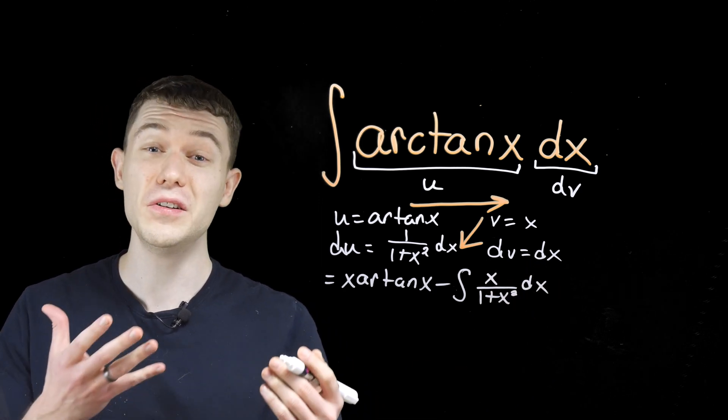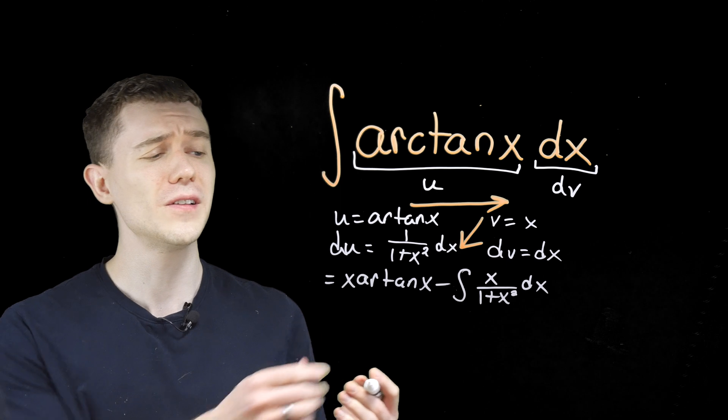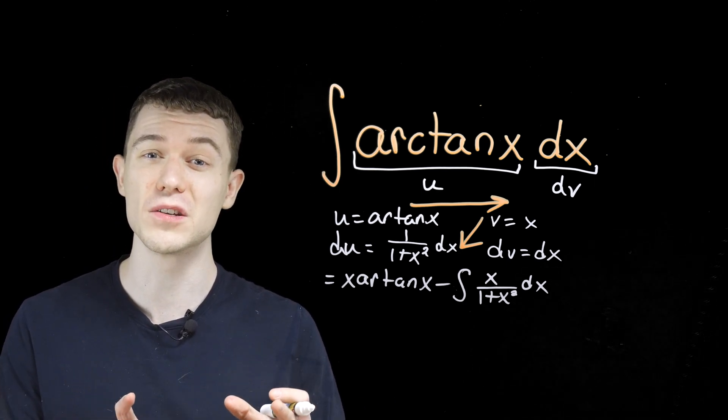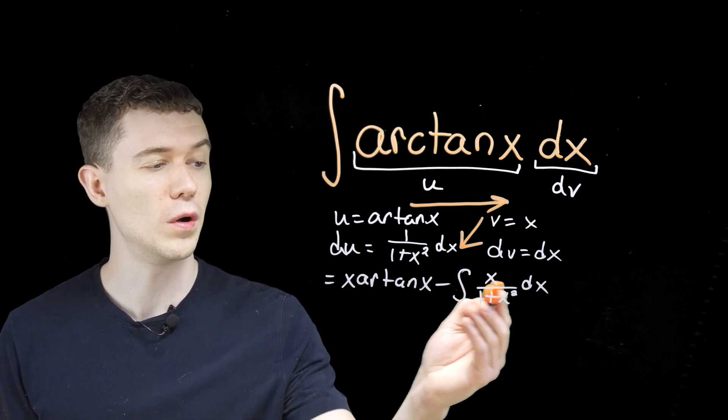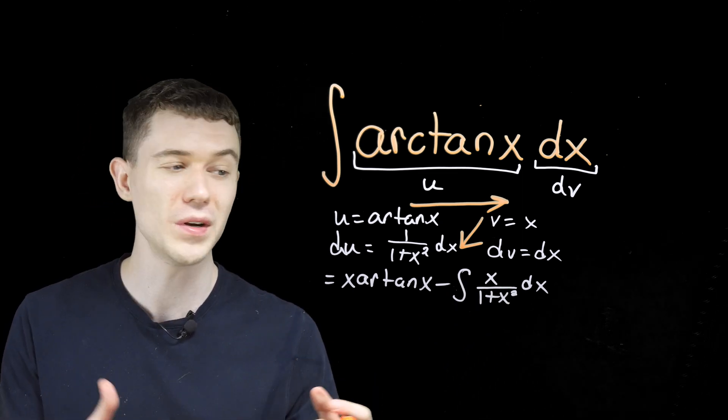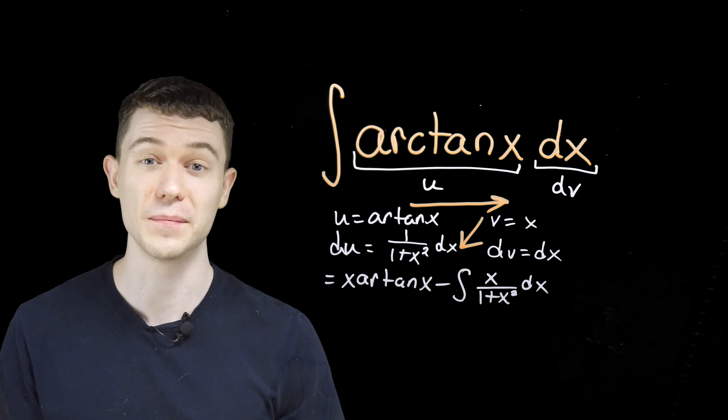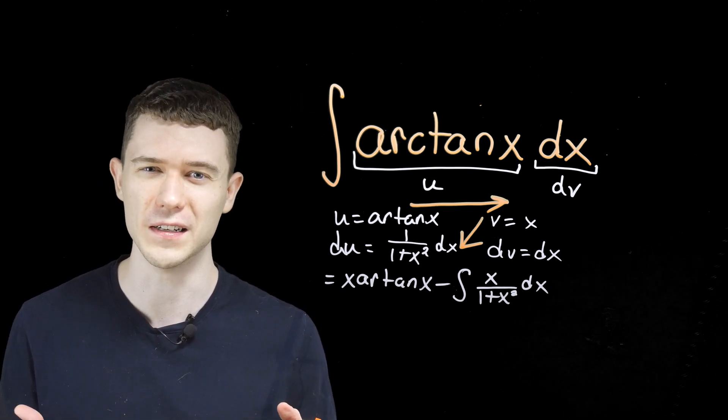And now we have a new integral to solve. Fortunately, this one is much nicer. This one we can solve via a simple u substitution. Here, we'll take u to be 1 plus x squared, since its derivative is just x up top, off by a constant. We'll see.